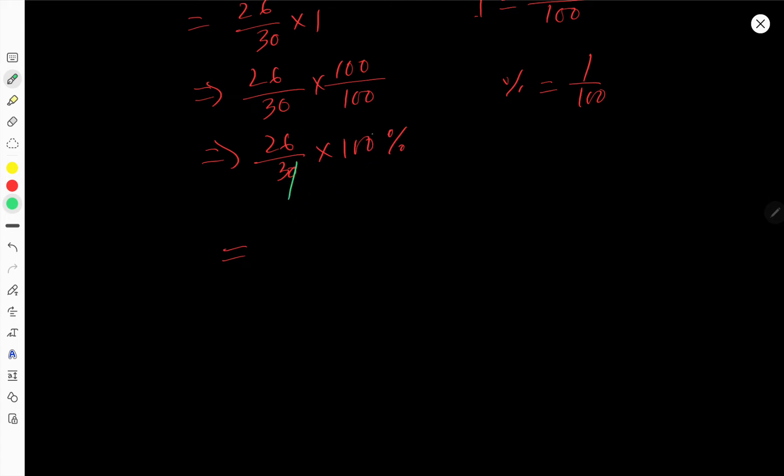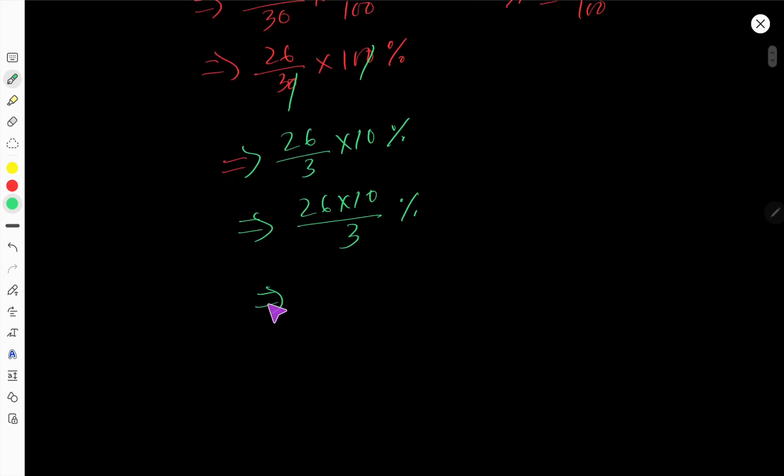Cancel this 0 and this 0, so you are getting 26 divided by 3 times 10. That is, you are getting 26 times 10 divided by 3, and you also have to place the percentage sign.